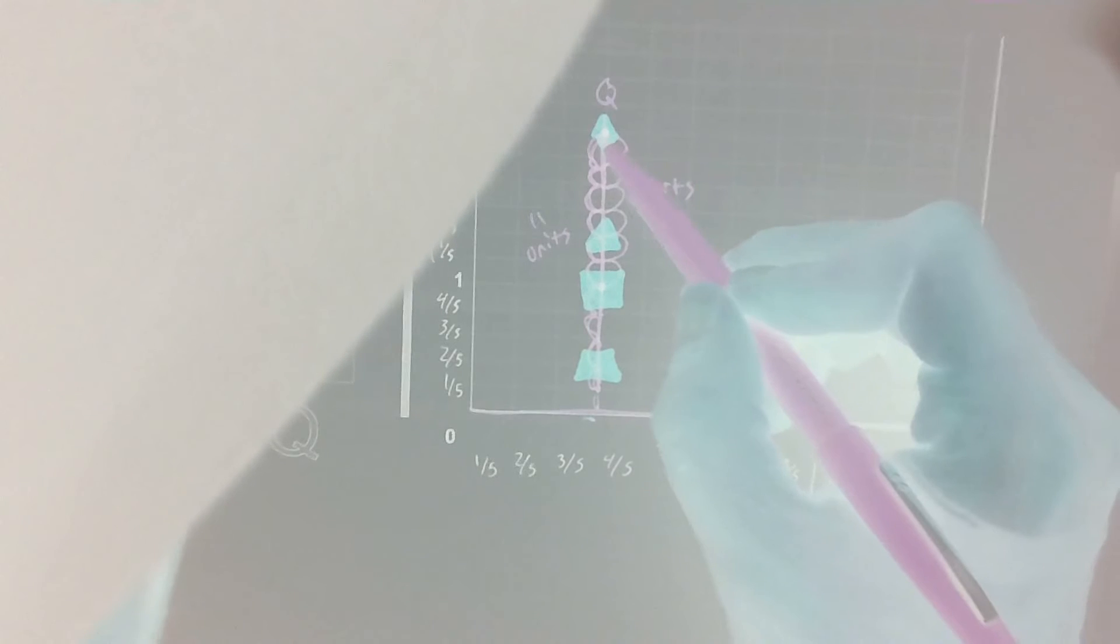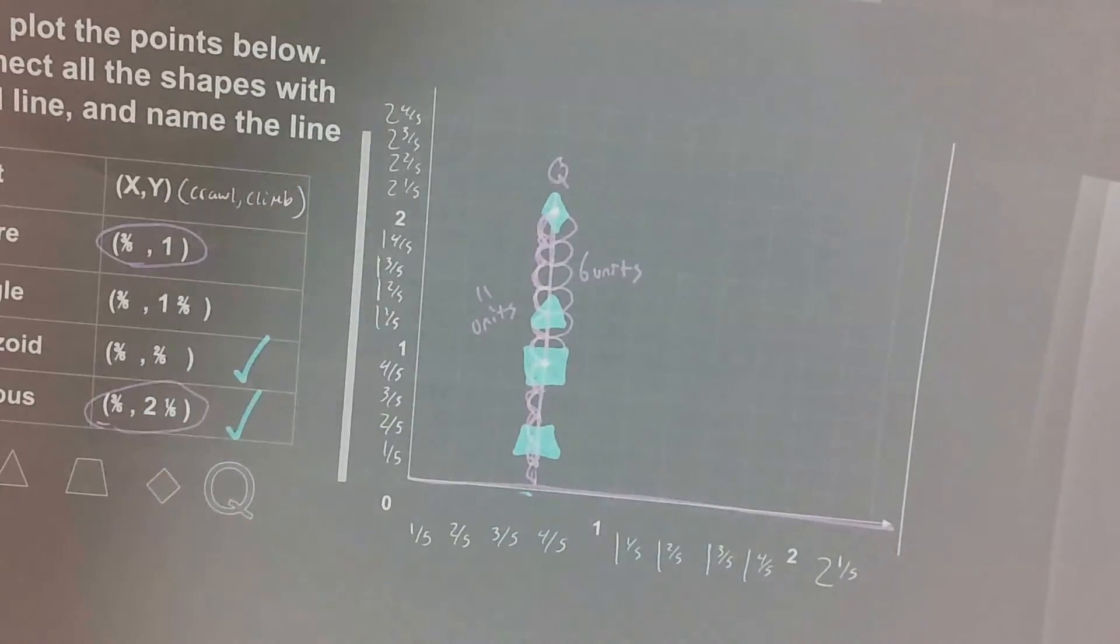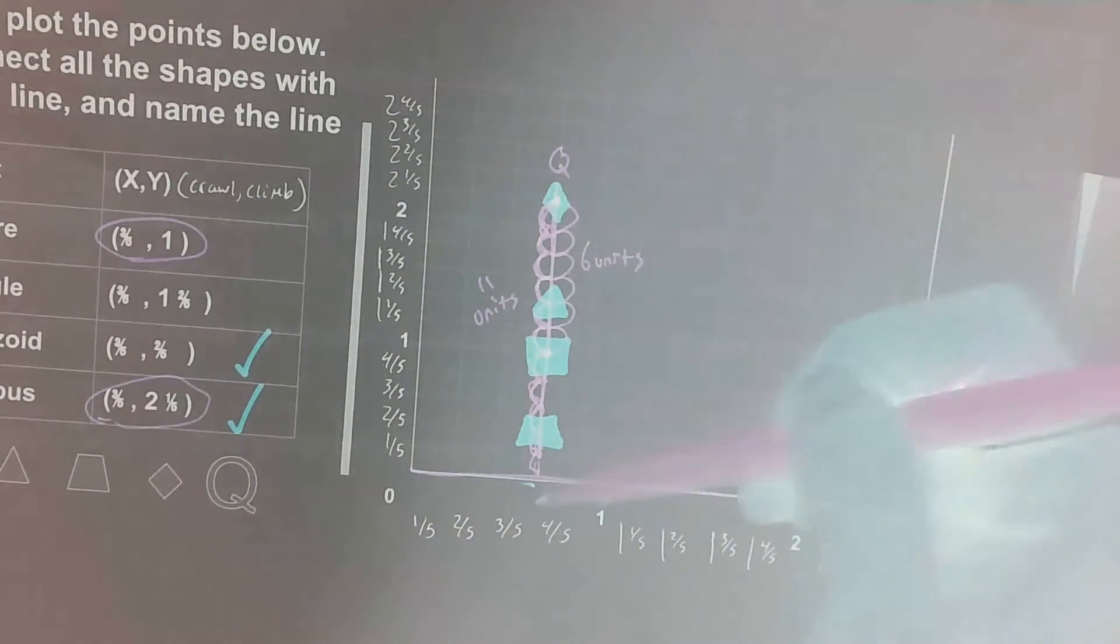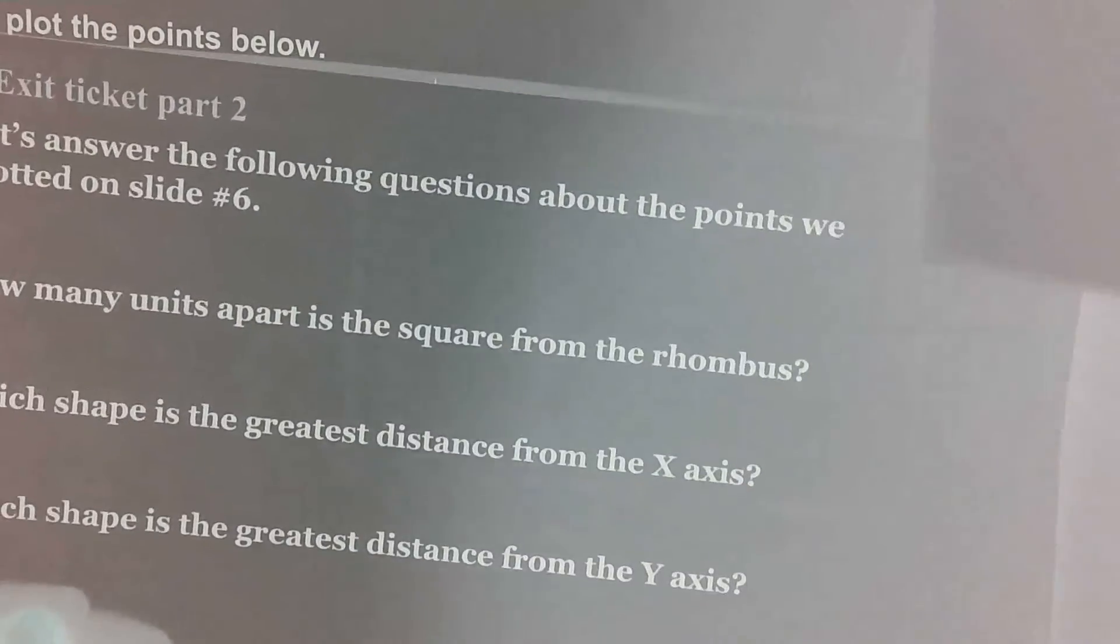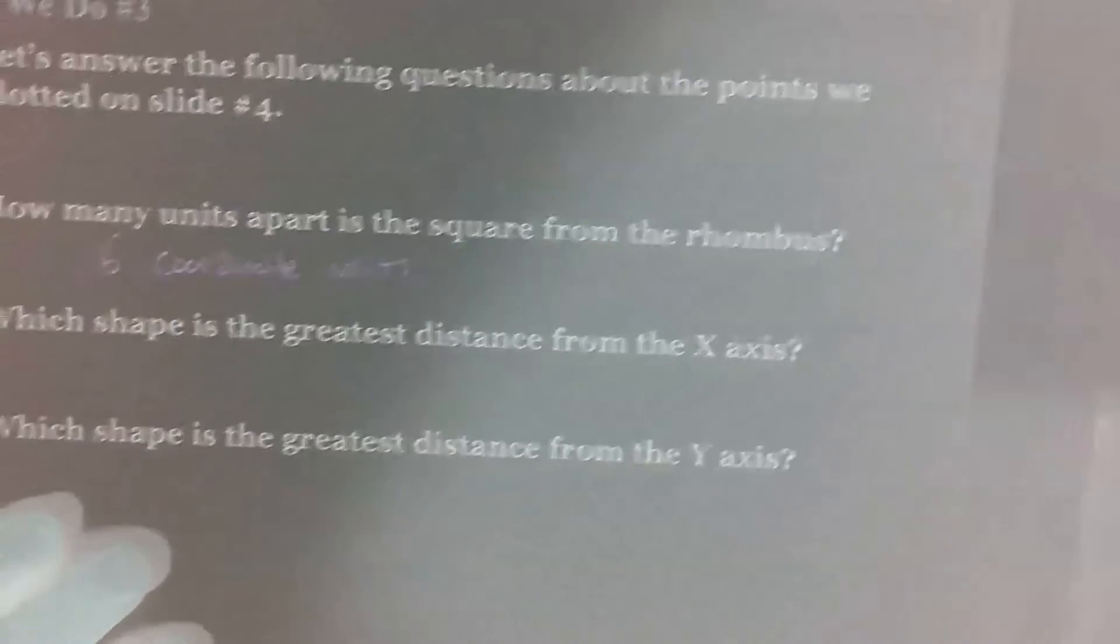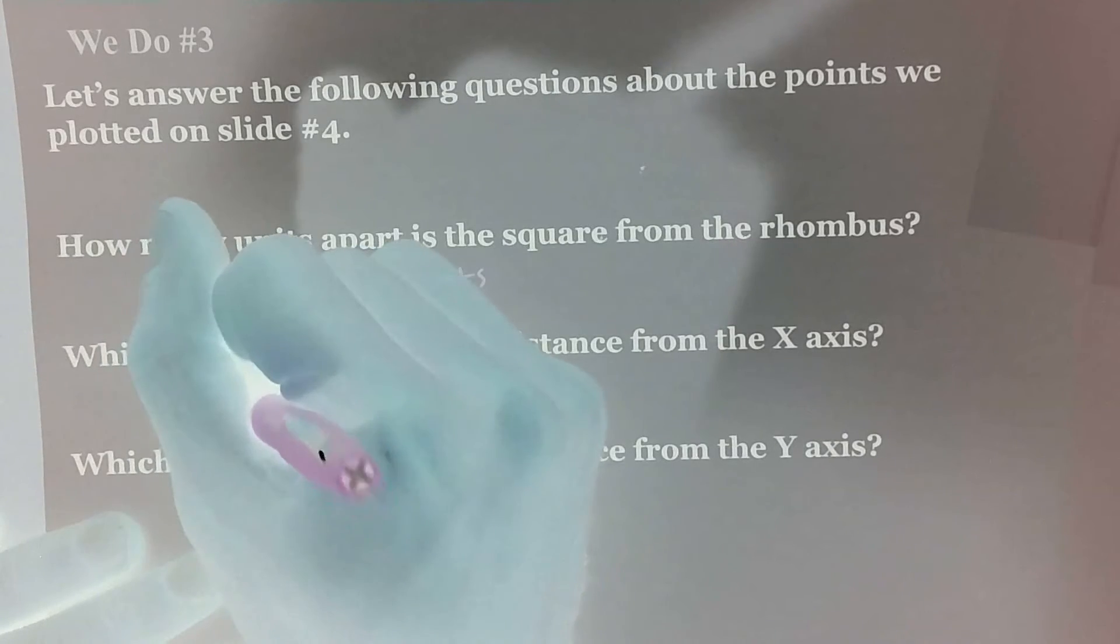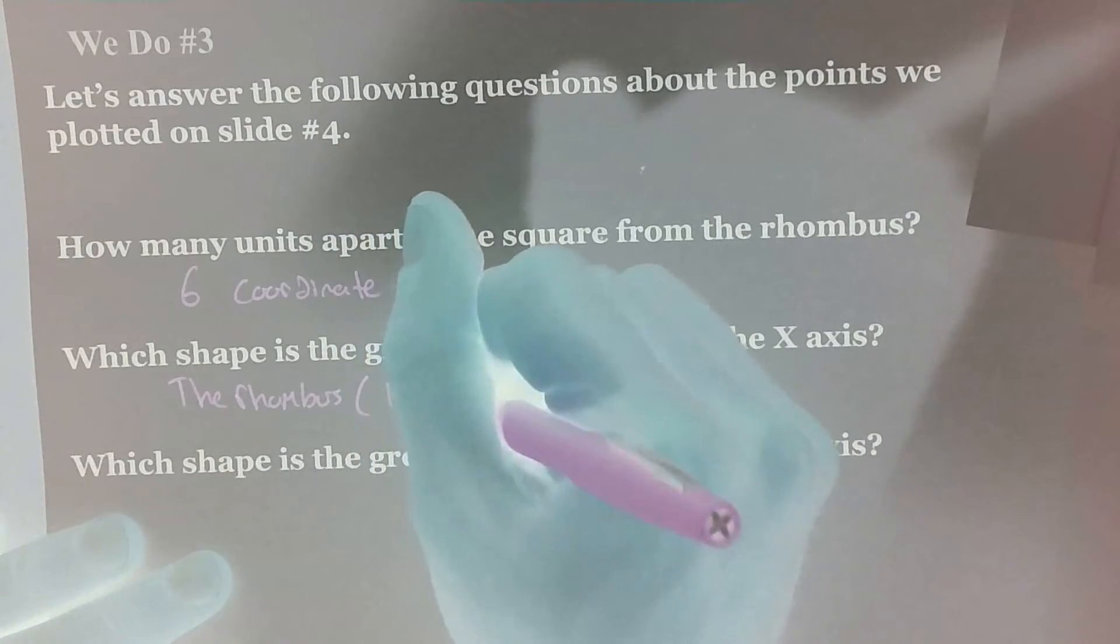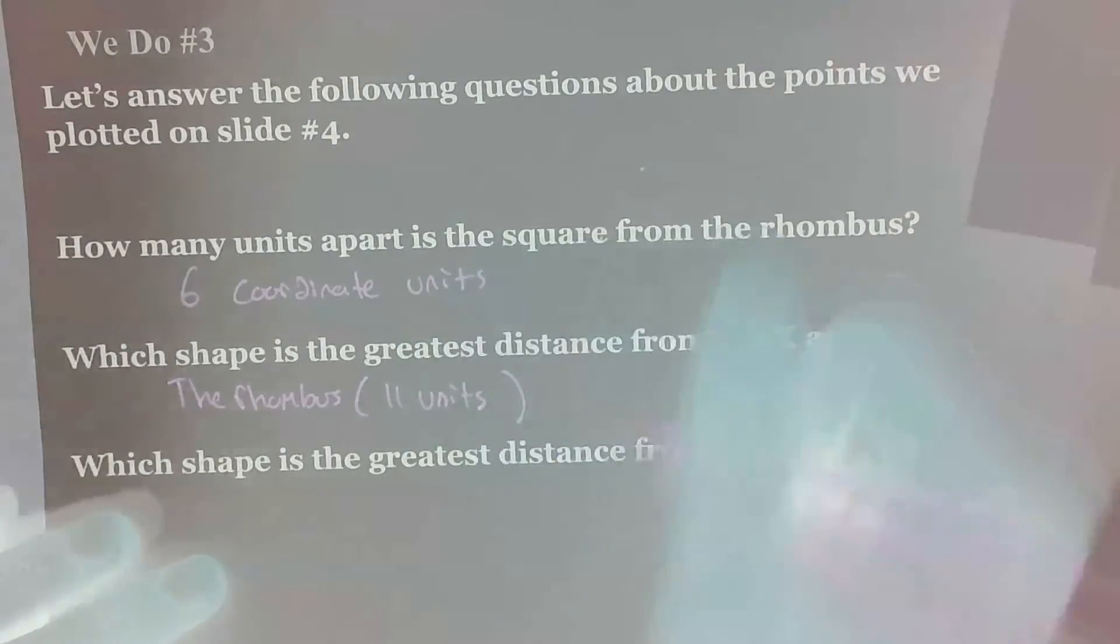Recounted and got 11. Let me double check here. Let's double check. One, two, three, four, five, six, seven, eight, nine, ten, yes, 11 units away. We can also just tell by looking at the graph that the rhombus is the further shape away from our x-axis at the bottom here. The answer is the rhombus. And then in parentheses, I'll put 11 units was our distance.